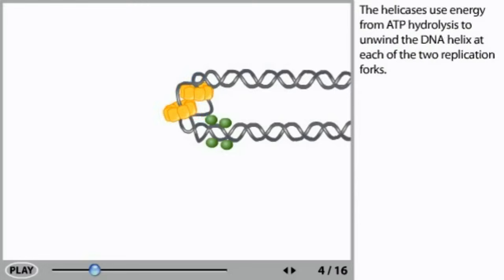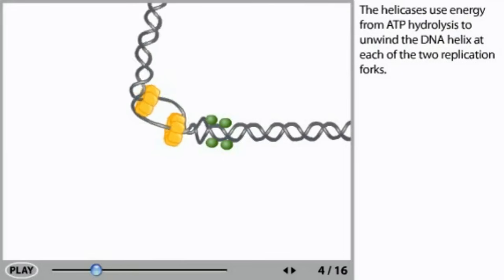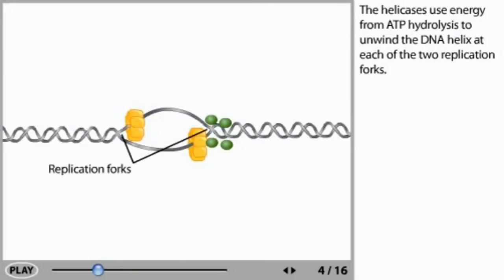The helicases use energy from ATP hydrolysis to unwind the DNA helix at each of the two replication forks.